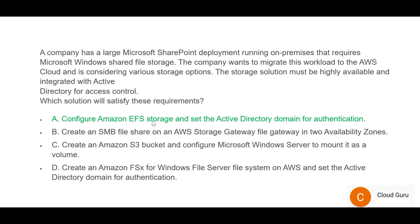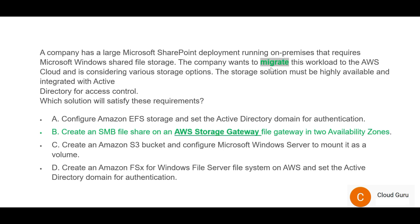Let's cancel the options. Option A: EFS works with Linux, not with Windows platform. The question clearly says Windows, so A is wrong. Option B: SMB file works very well with Windows — that's good — but AWS Storage Gateway is the culprit here. The question clearly says 'migrate the workload.' Storage Gateway is useful when you have a data center as well as cloud and you're keeping it integrated for future deployments, but that is not the requirement here since the question clearly says migrate the workload.